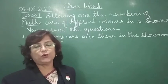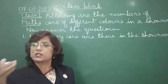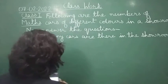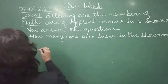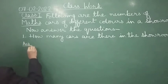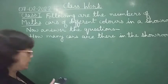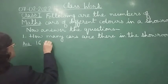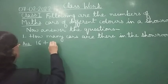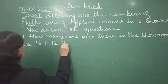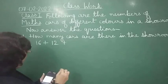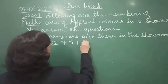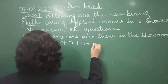The total number of cars — we have to find the sum of all colors. Red cars were 16, green cars were 12, so 16 plus 12. Blue cars were 5, black cars were 4, and white cars were 13. Now add all of these together. You can do it orally, or use pencil and paper.